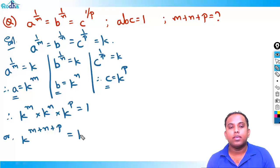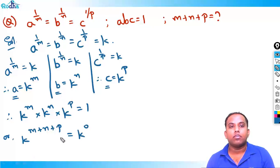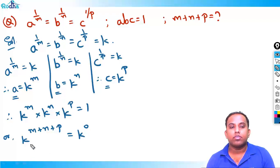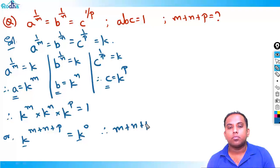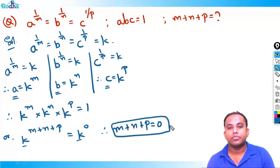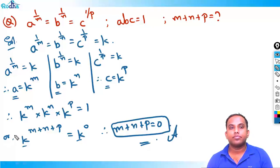Since k^(m+n+p) = 1, and 1 can be written as k^0, equating exponents gives m + n + p = 0. That is the answer for this question.